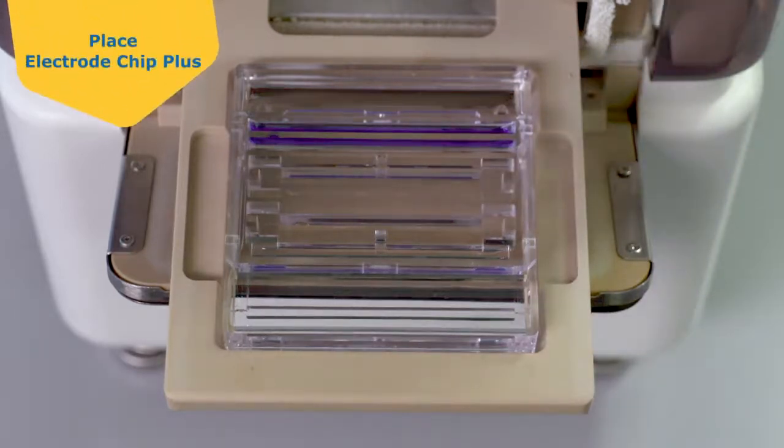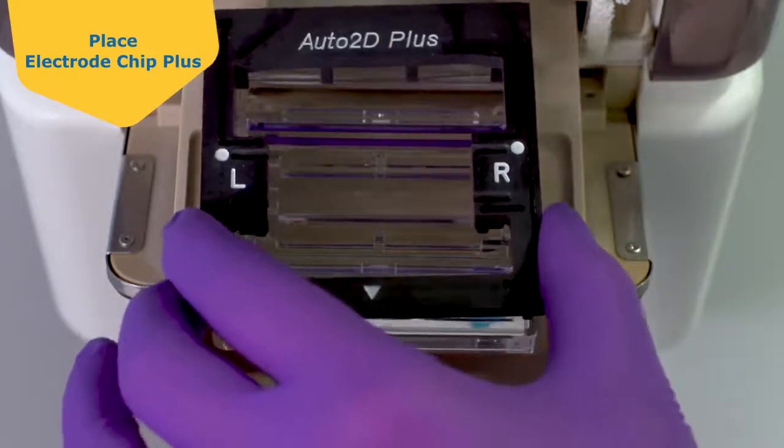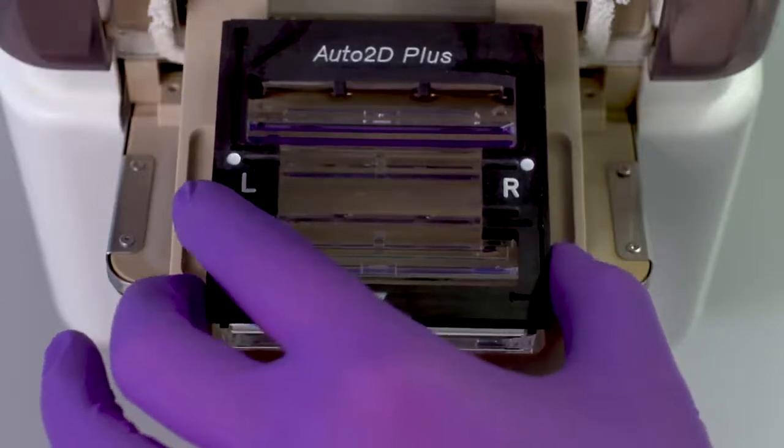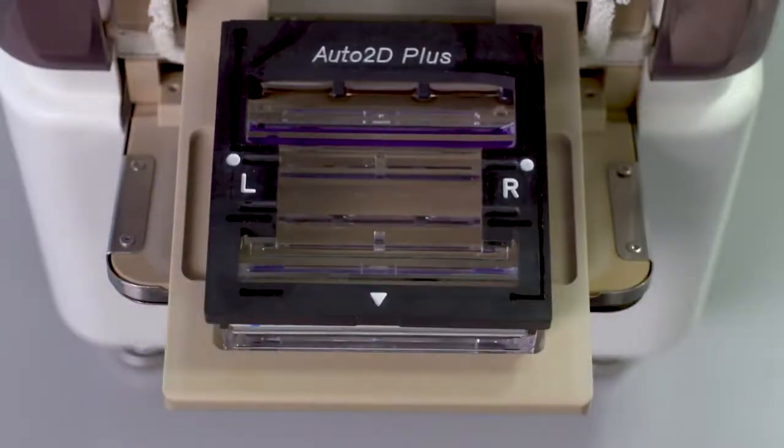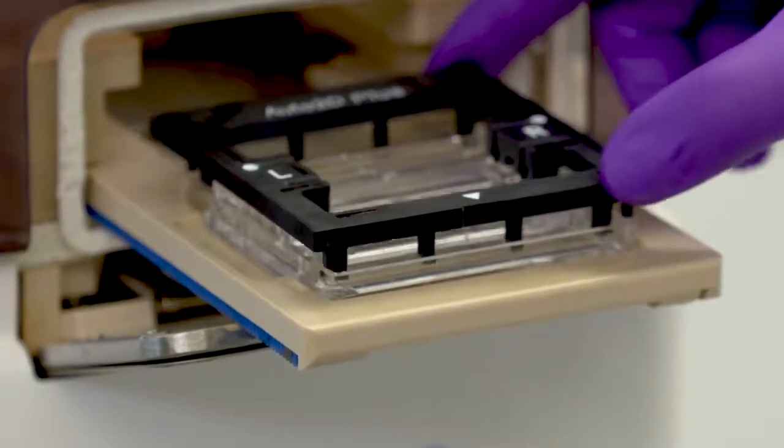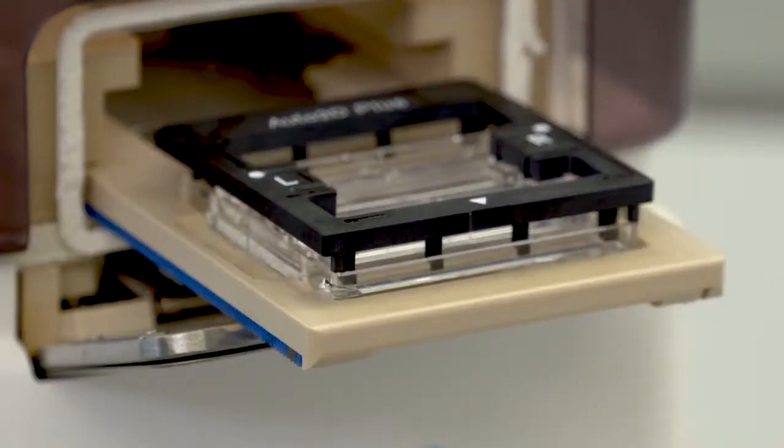Once all solutions are loaded, set the Electrode Chip Plus on top of the Solution Chip Plus with the triangle toward the front of the chip. Make sure that the Electrode Chip Plus is dry before adding it to the chip assembly and is sitting securely on the Solution Chip Plus. This is an example of an incorrect chip assembly. And this is how the chips look when they are assembled correctly.